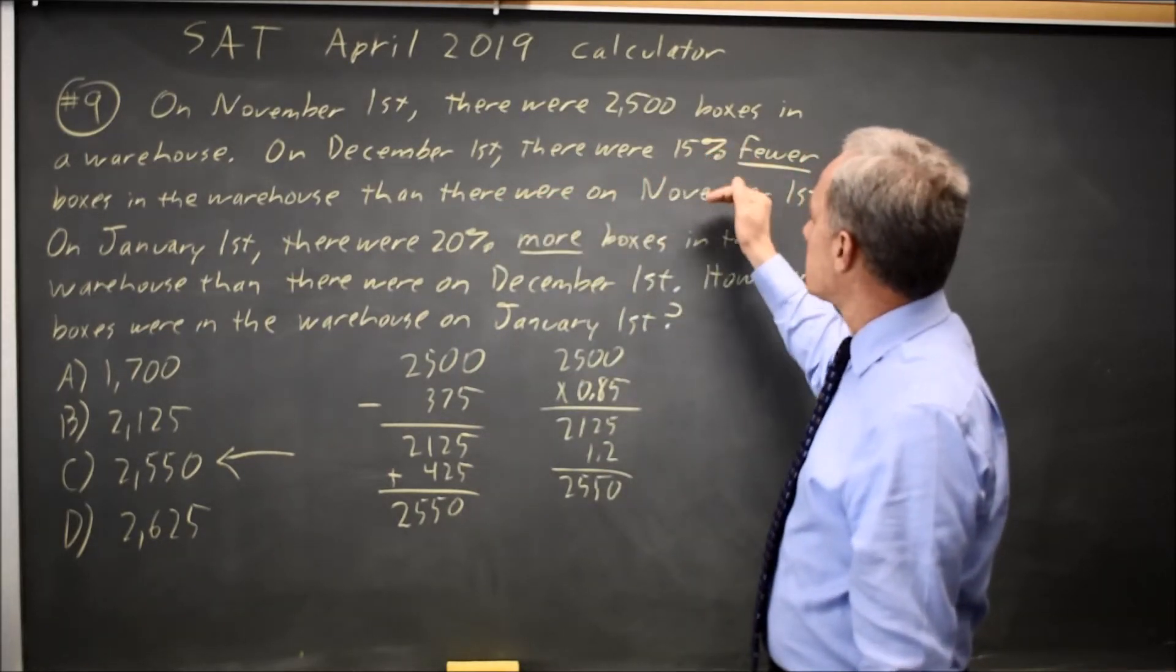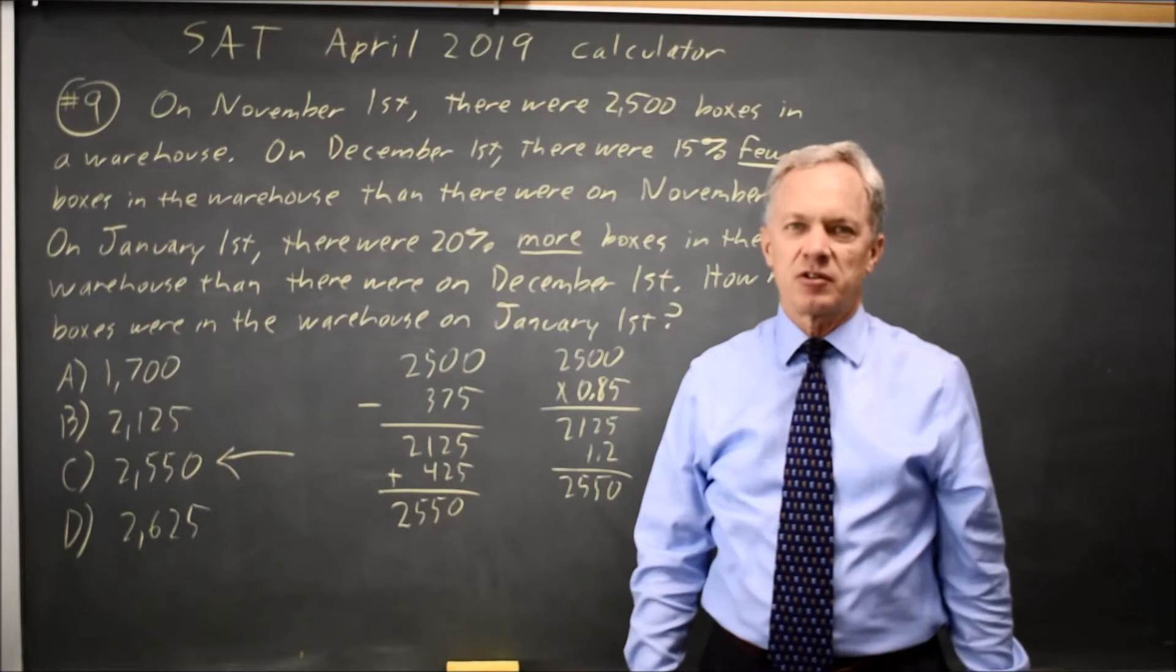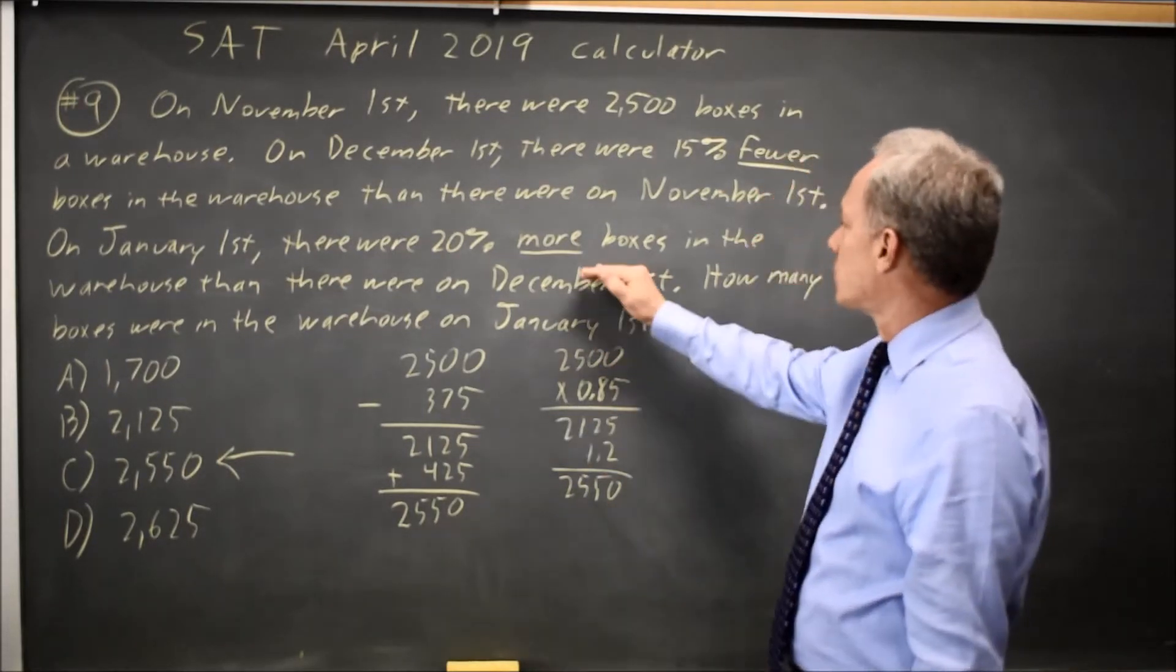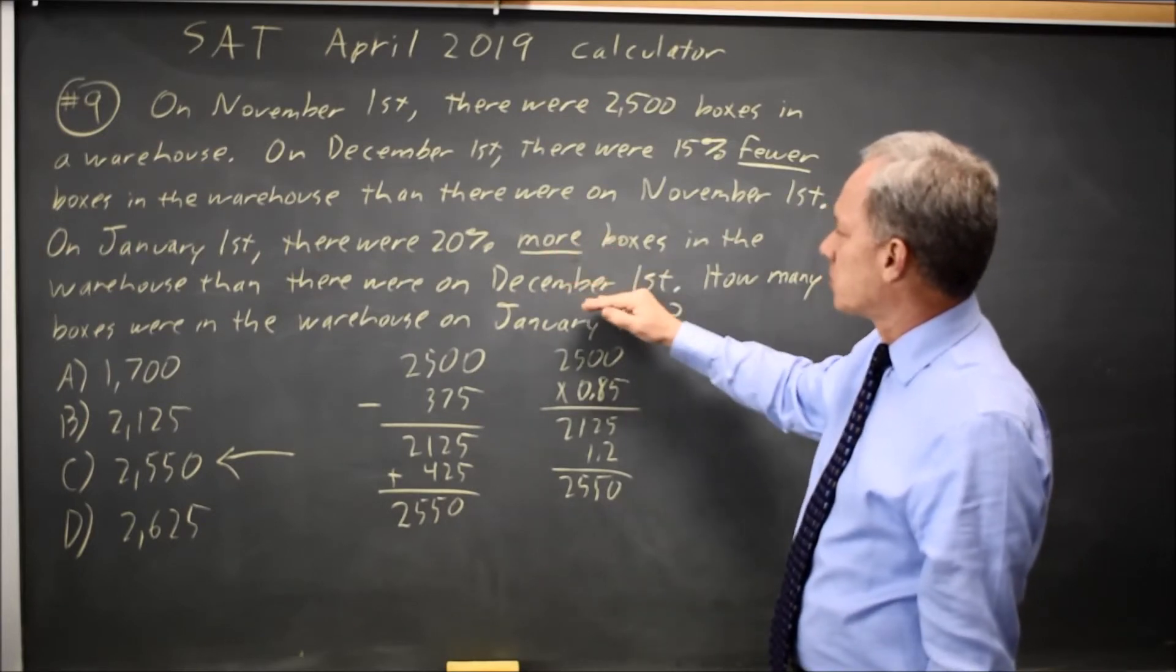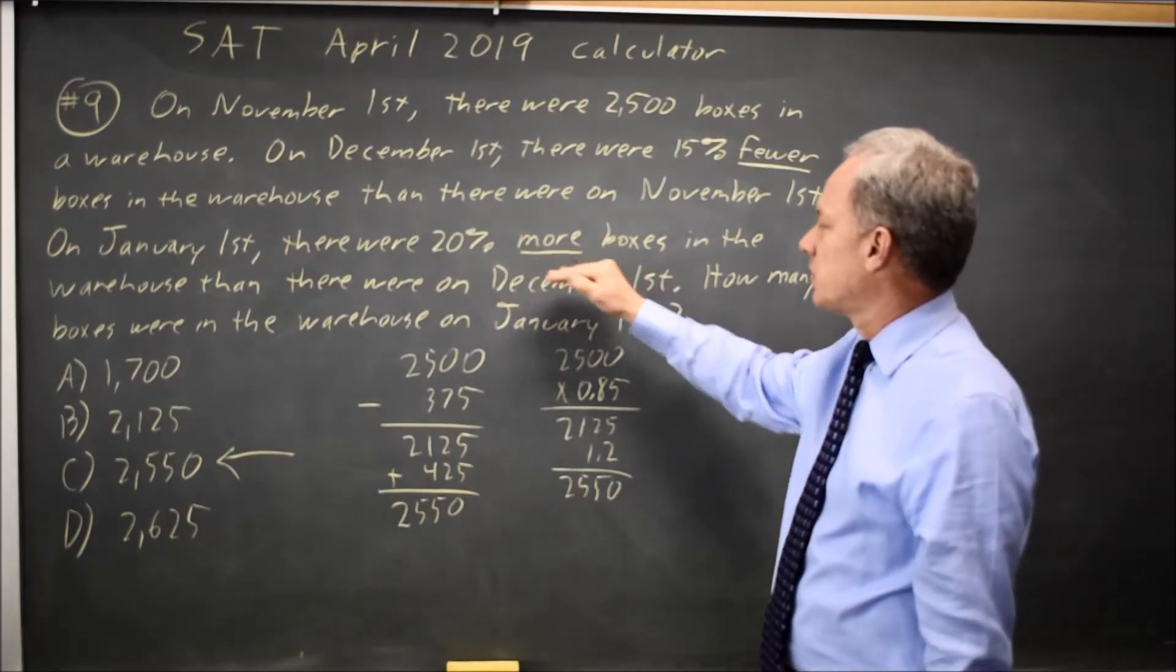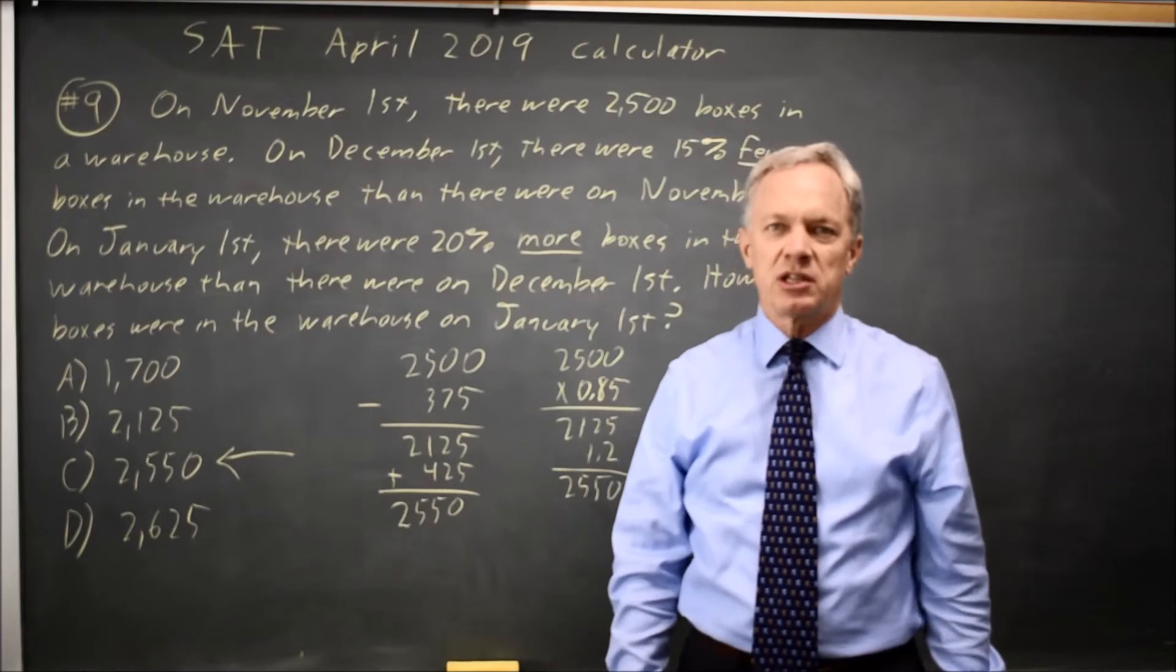Since it's fewer than November 1st, it's 15% of the November 1st number. And since there were 20% more than there were on December 1st, it's 20% of the December 1st number that you have to add.